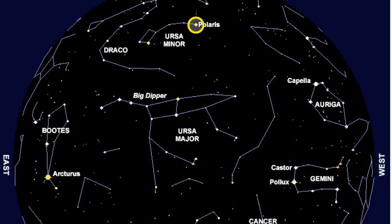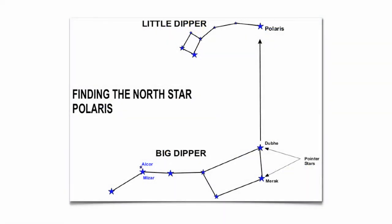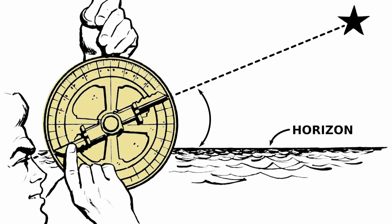Polaris is the only star in the nighttime sky that doesn't move — all other stars travel around Polaris in a counterclockwise direction. To find it, locate the Big Dipper: the two front stars always point to Polaris, which is the last star in the handle of the Little Dipper. Once you find that star, you can use an instrument called an astrolabe to figure out the angle from the horizon up to the star, and from that you can determine the latitude you're on.